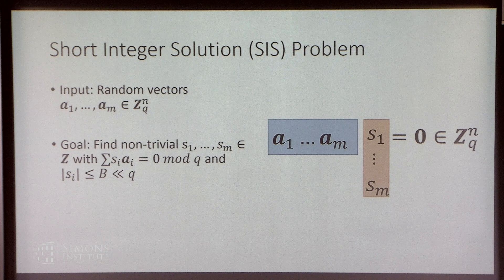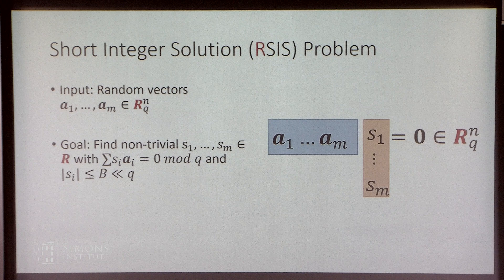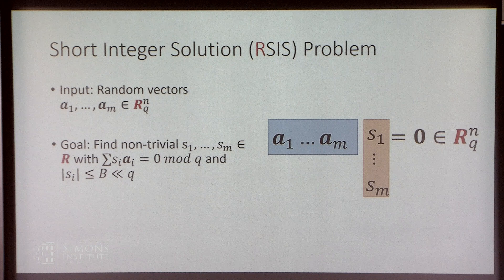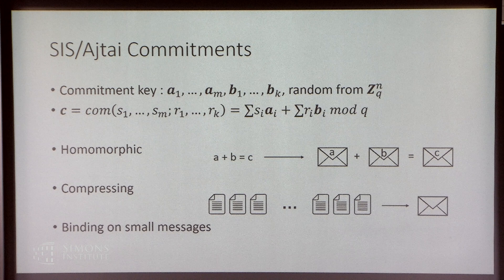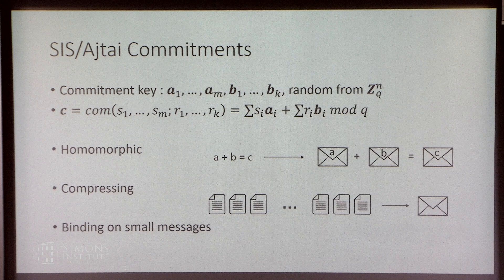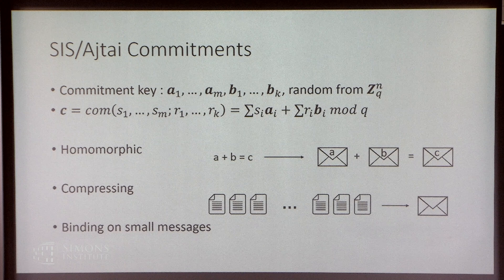Sometimes we consider a more general version — the ring SIS problem — where we replace all integer rings by more general rings. This is hard for well-chosen rings R; the only change is to properly define the norm of elements s_i. If the SIS problem is hard, you can design cryptographic commitments based on SIS, or on Ajtai's one-way function. The commitment key is random vectors a_i and b_i, and you commit to messages s_i with randomness r_i by taking a linear combination of all these vectors mod q. This is also a homomorphic and compressing commitment scheme, binding as long as the messages and randomness values have bounded norm.